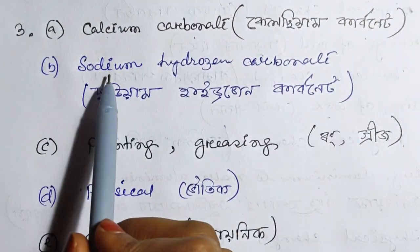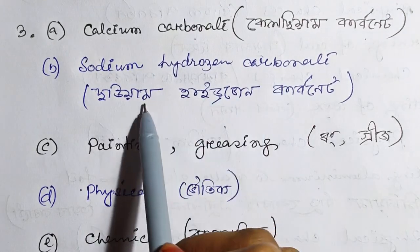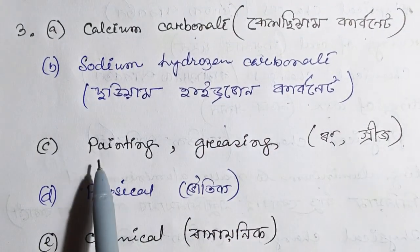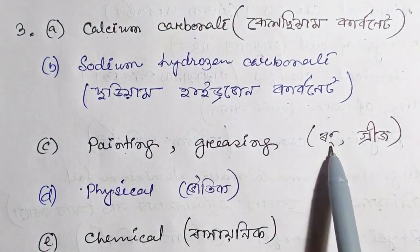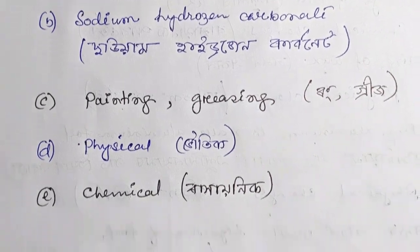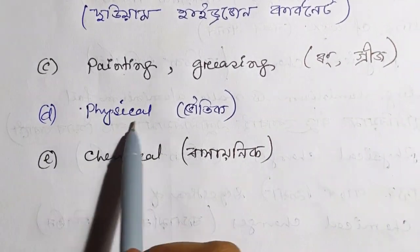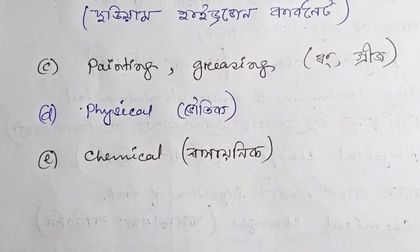Number B: Sodium hydrogen carbonate. Number C: Painting and greasing. Number D: Physical changes. Number E: Chemical changes.